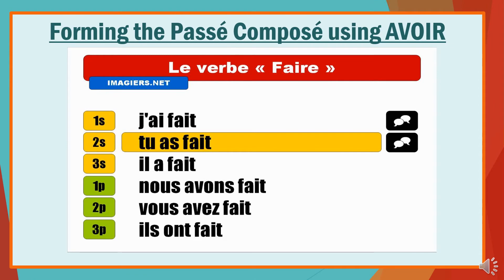Similarly, the conjugation in the passé composé for faire has also been done. Faire means to do or to make. Remember that faire is an irregular verb when it comes to forming the participle — the participle of faire is fait (f-a-i-t). You can observe how the conjugation has been done by using the present tense of avoir followed by the participle.